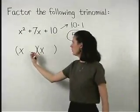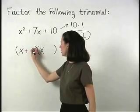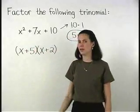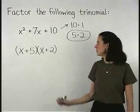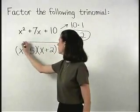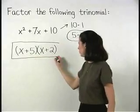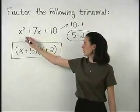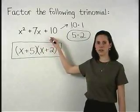So we put a positive five in our first binomial and a positive two in our second binomial and we have our answer, x plus five times x plus two, which is a factored version of x squared plus seven x plus ten.